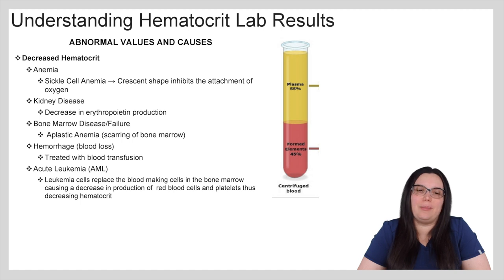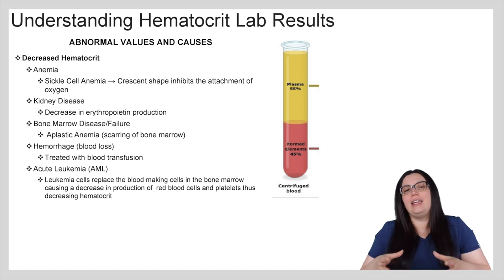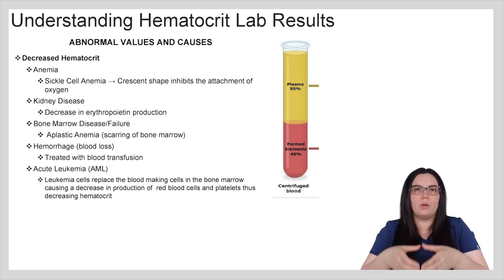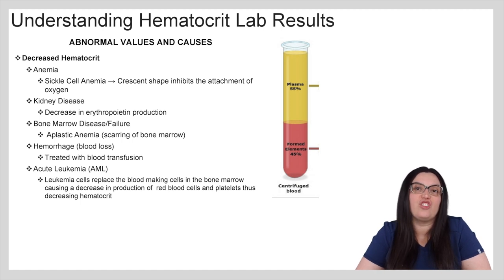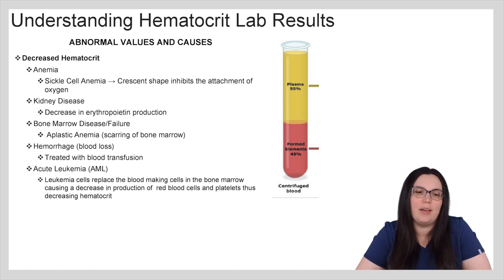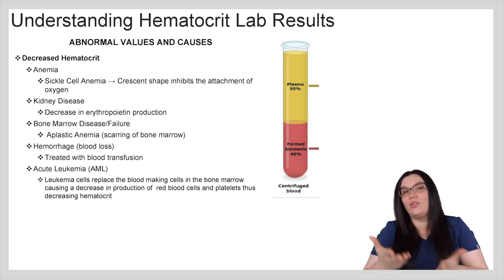Decreased hematocrit can be caused by a number of things. We could be looking at anemia, specifically sickle cell anemia — because of the crescent shapes, they inhibit the attachment of oxygen and inhibit red blood cell formation since they don't have that bioconcave design, limiting hematocrit numbers. Kidney disease causes a decrease in erythropoietin production. Bone marrow disease or failure such as aplastic anemia involves scarring of the bone marrow. Blood loss is usually treated by blood transfusions. And lastly, acute leukemia such as AML — leukemia cells replace the blood-making cells in the bone marrow, causing a decrease in production of red blood cells and platelets, thus decreasing hematocrit numbers.